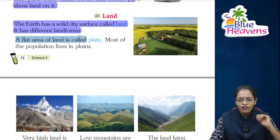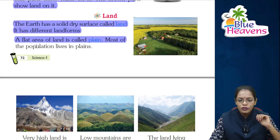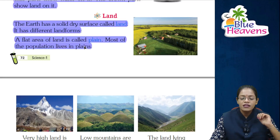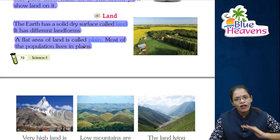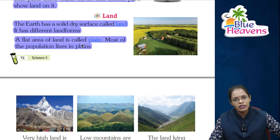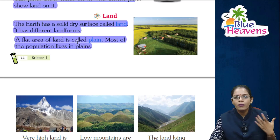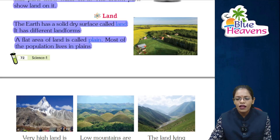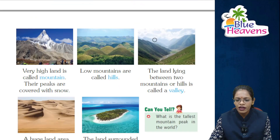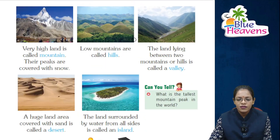A flat area of land is called a plane. Most of the population lives in plains. Here is the image of a plain.